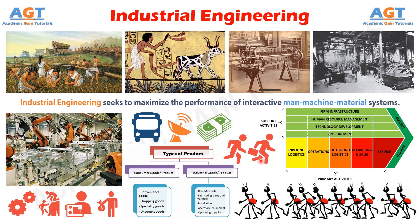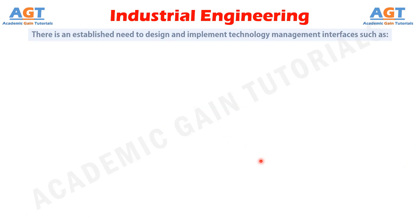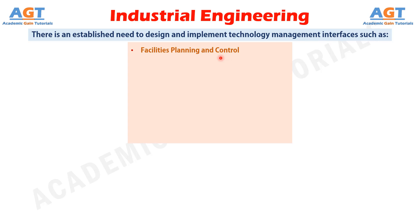Increasing competition is demanding a greater need to ensure optimal utilization of all assets such as people, material, equipment and time in business systems. Thus, there is an established need to design and implement a variety of planning and control systems in the various technology management interfaces such as facilities planning and control, and operations planning and management.